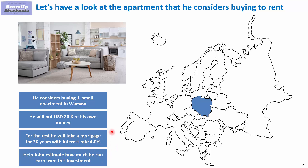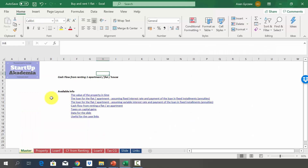Now let's try to estimate how much cash flow he can generate over the course of 20 years. We're going to see how his cash flow will change in each and every year, starting from year one where he's purchasing the apartment till year 20 where the loan should be fully covered and he can keep the apartment or sell it. Let's move to the Excel model.